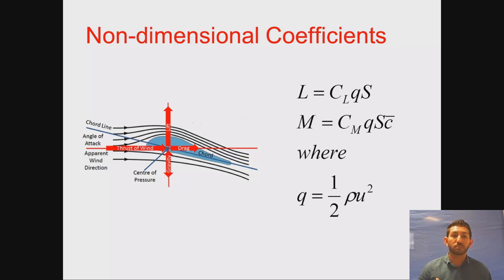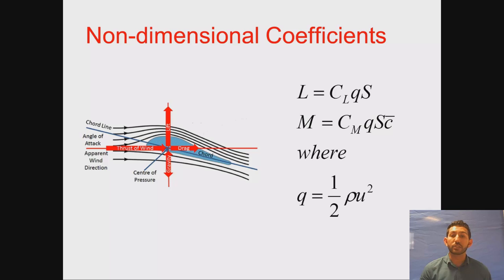The most common way of working with force and moment values is to convert them into non-dimensional form, which allows normalization — for example, wind tunnel results can be scaled up to a larger aircraft. The coefficient of lift is calculated by dividing the lift force by the dynamic pressure (half times air density times velocity squared) and the wing area S. For the non-dimensional moment coefficient, you also divide by C-bar, the mean aerodynamic chord length.